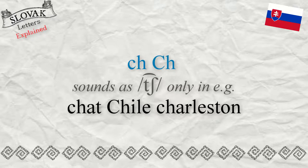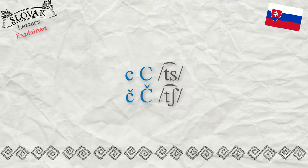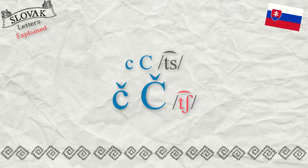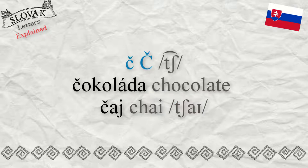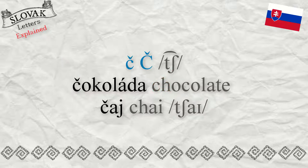Only in some foreign words adopted into Slovak does the letter CH sound like Č — for example, 'čet' (chat), 'Čile' (Chile), and 'Charleston.' In other words, the sound Č is represented in Slovak by the soft variant of the letter C with a softening mark above it, as in 'čokoláda' (chocolate). It is not the CH letter — it is C with the softening mark. Another example is 'čaj,' meaning tea.